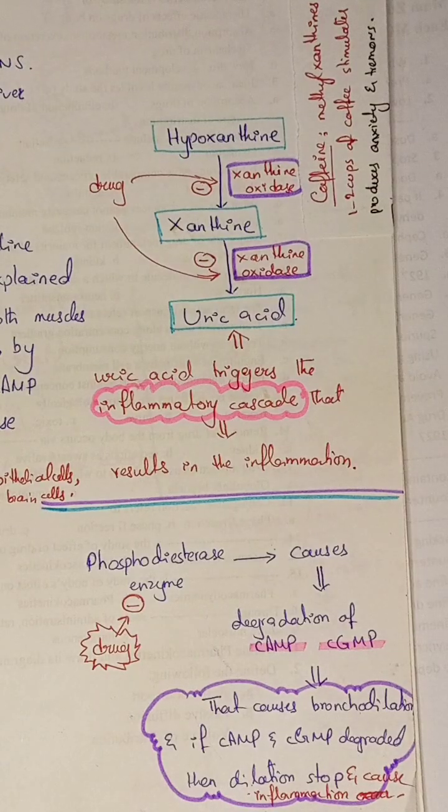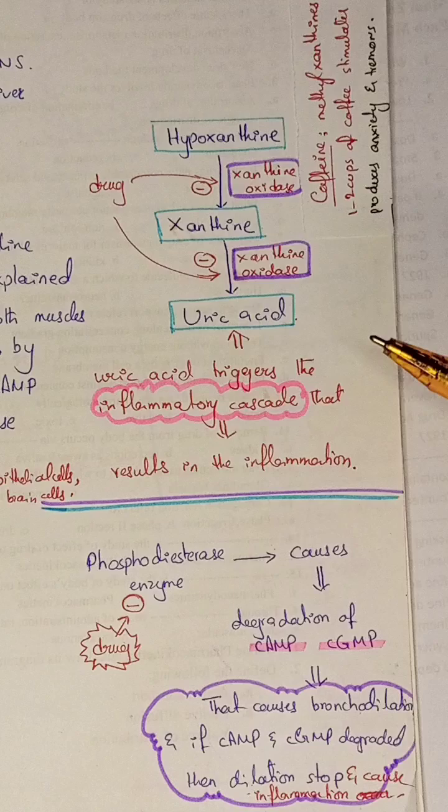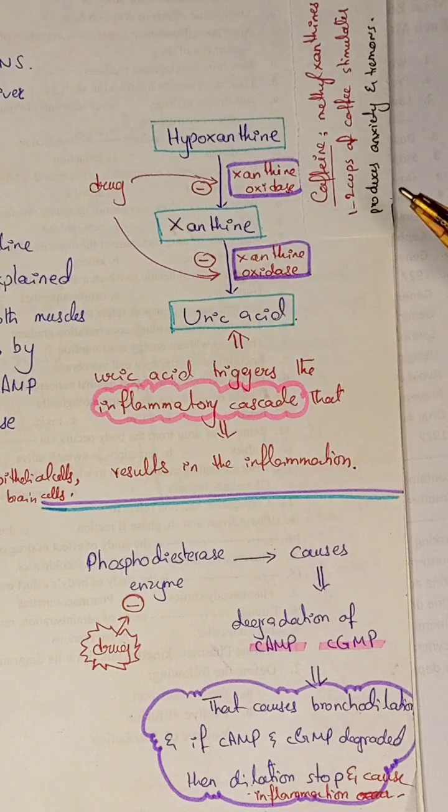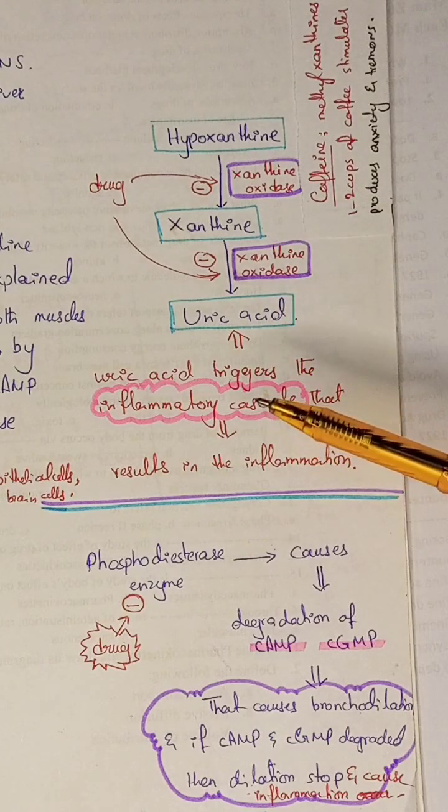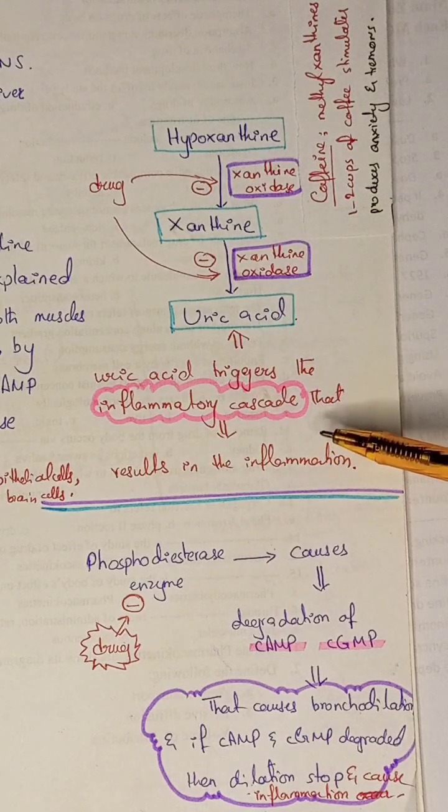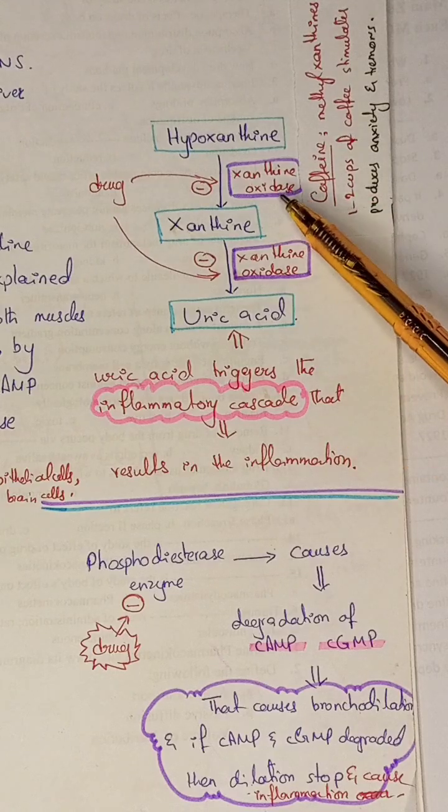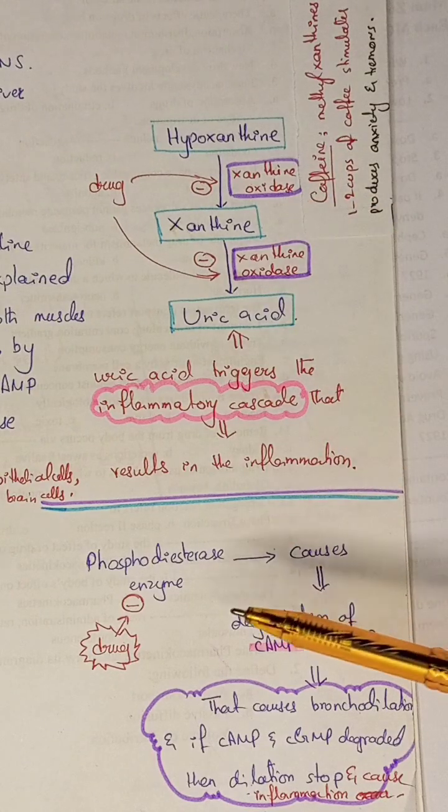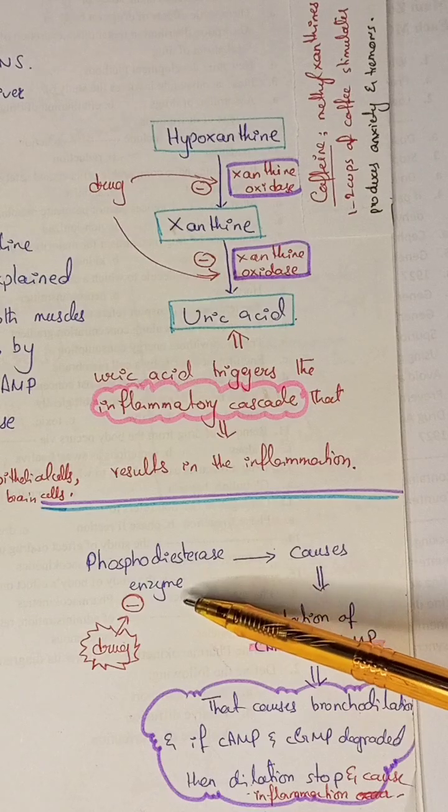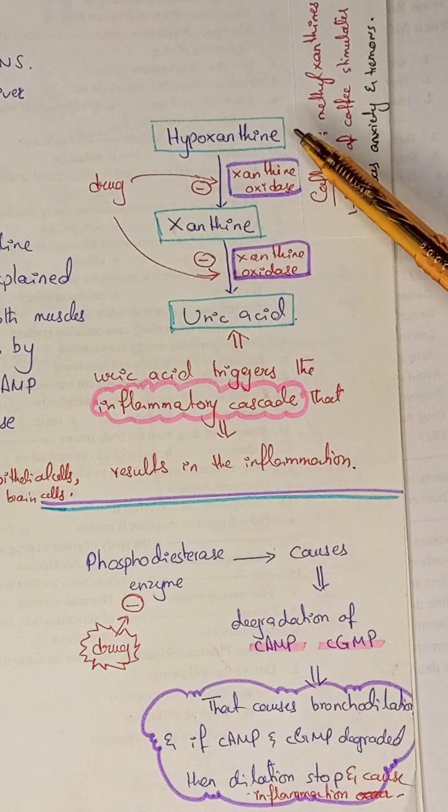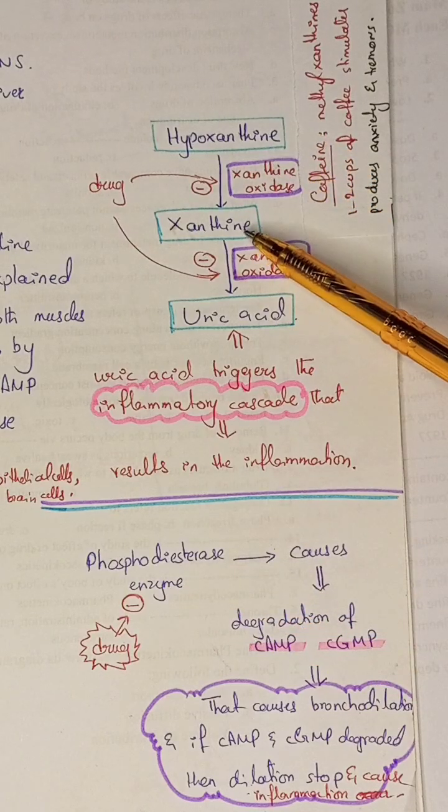The mechanism of action of xanthine oxidase inhibitors is not fully known, but researchers explain that inhibitors like theophylline inhibit both xanthine oxidase enzyme and phosphodiesterase enzyme. Hypoxanthine is converted into xanthine